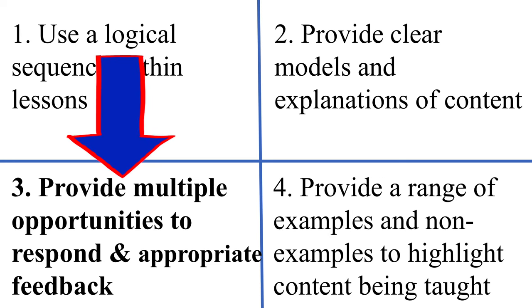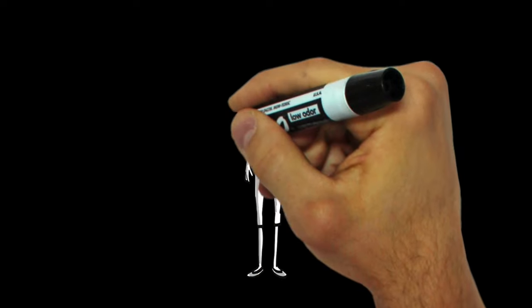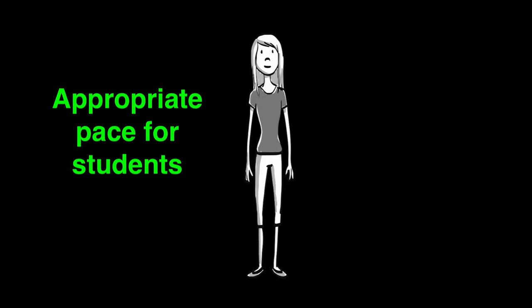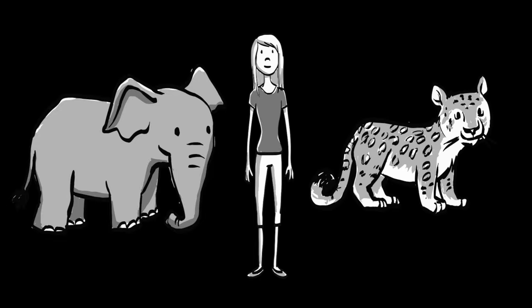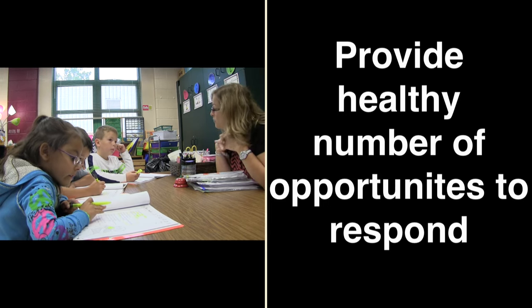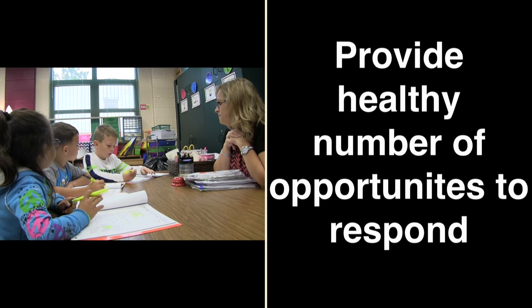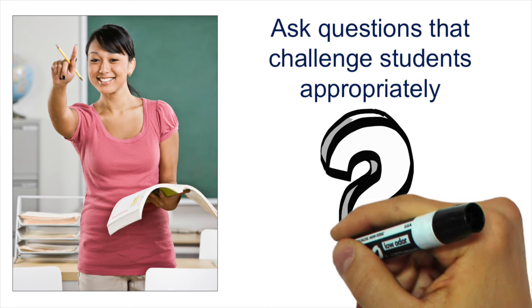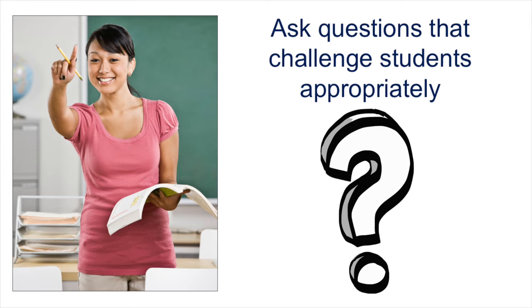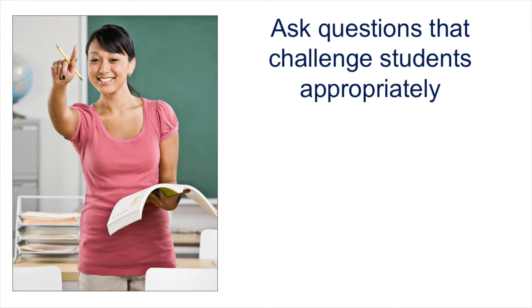Component 3: Provide multiple opportunities to respond and appropriate feedback. Explicit instruction should be delivered at a pace that allows students to make the needed connections to boost learning. An instructional pace that's too slow can cause boredom; too fast and you risk overwhelming students' limited cognitive resources. One way to keep your lesson moving is by delivering a healthy number of opportunities to respond. Students' responses can be verbal, written, or performed, and questions should challenge students at varying levels of difficulty tied to a logical instructional sequence.